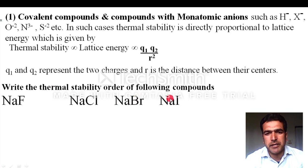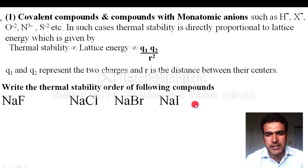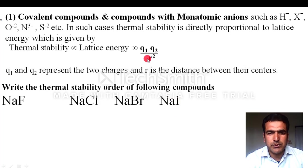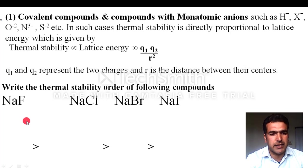Let's compare lattice energies. The charge of each ion is +1 and −1. As you move from fluorine to iodine, the ionic size increases, so the distance between sodium and the anion center increases. Greater r means lower lattice energy, which means lower thermal stability. So the order is: NaF > NaCl > NaBr > NaI.